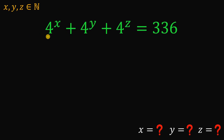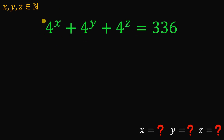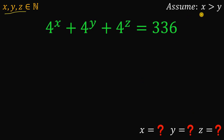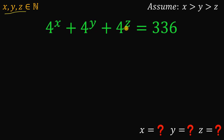Alright, so given this equation, and x, y, and z are all natural numbers — or simply positive integers — the goal is to find the value of x, y, and z. In this question, let's assume first that x is greater than y and y is greater than z. In general, if you find the value of x, y, and z, then the solution is its permutation.